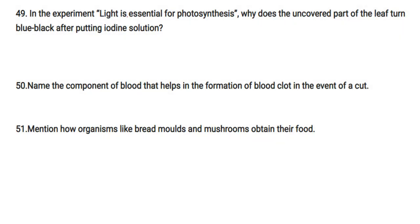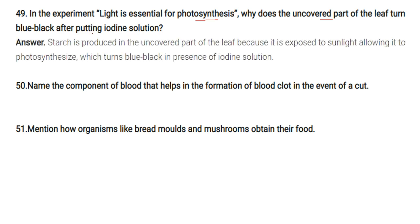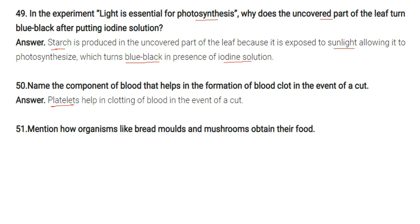In the experiment showing that light is essential for photosynthesis, why does the uncovered part of the leaf turn blue-black after adding iodine solution? Starch is produced in the uncovered part because it is exposed to sunlight, allowing photosynthesis; when treated with iodine, it turns blue-black. The covered part cannot photosynthesize so no starch is produced. The component of blood that helps in clot formation in the event of a cut is blood platelets.